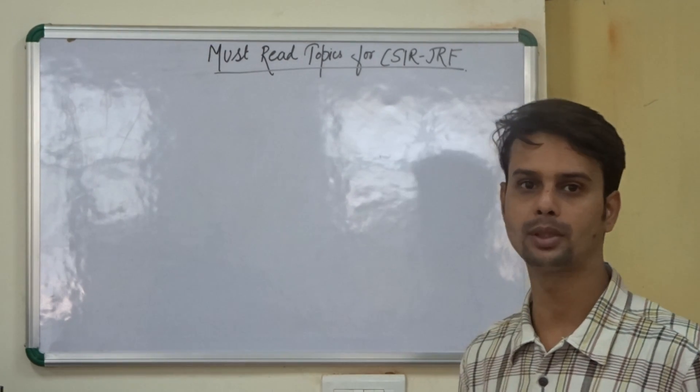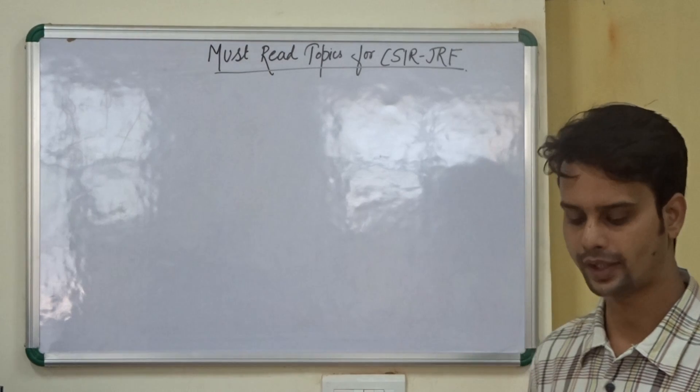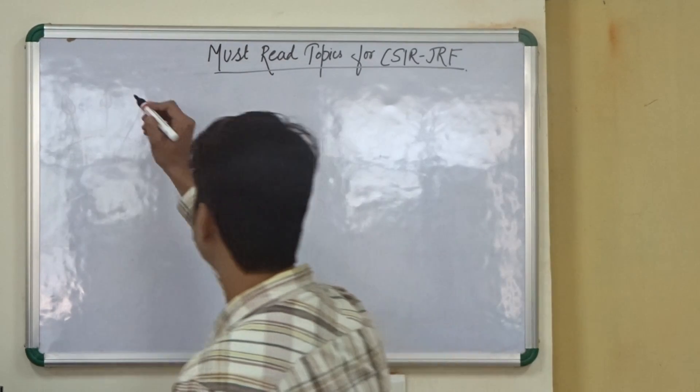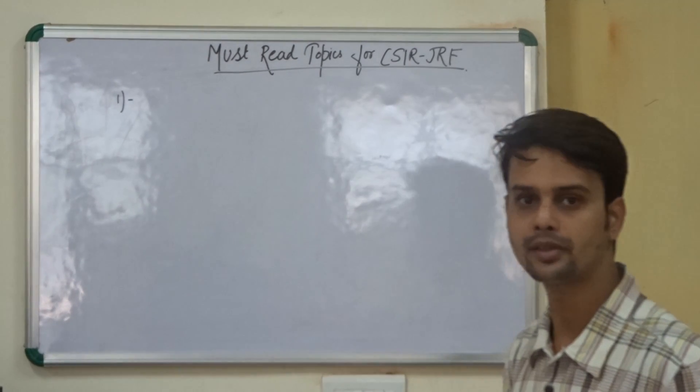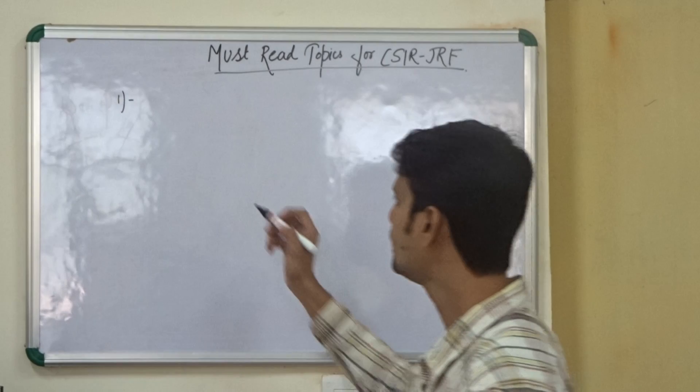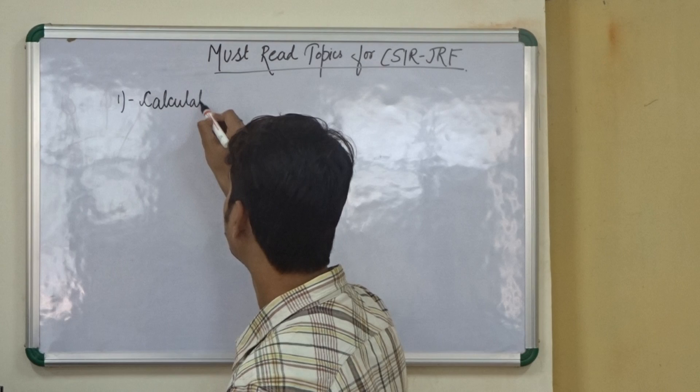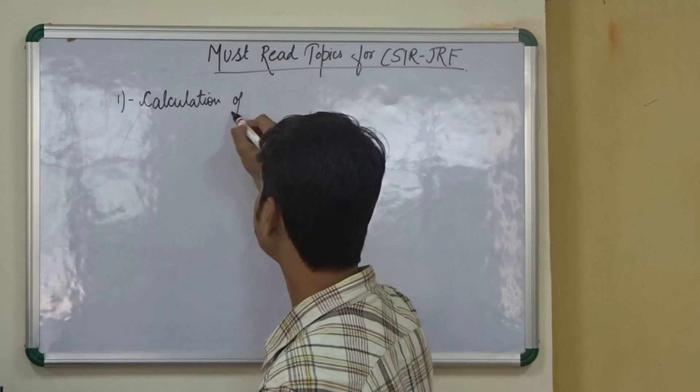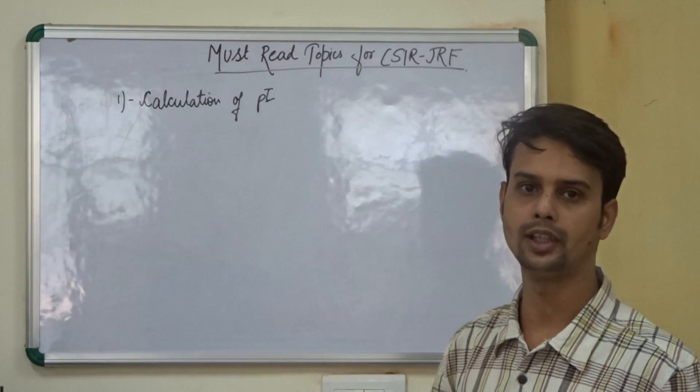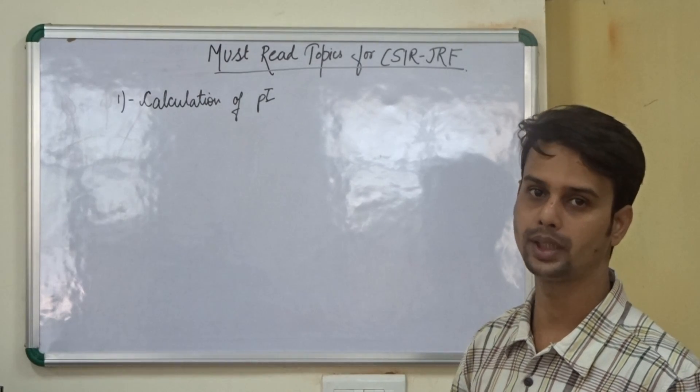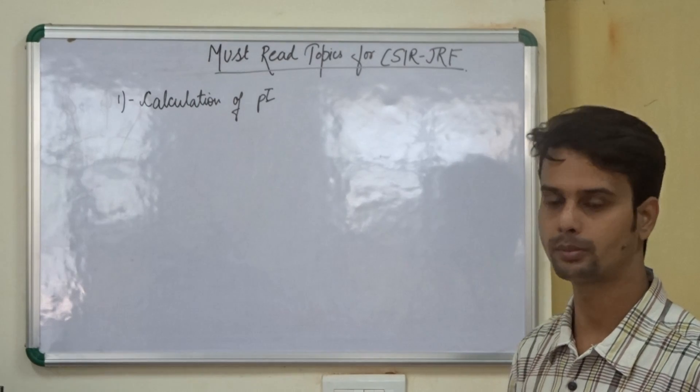I will be talking about the first three units of this syllabus of the CSIR-JRF. The first one is molecular biology, the biochemistry part. In the biochemistry part, we need to look at the calculation of PI value. They have given us the PK value of different amino acids and we need to calculate the PI value from it. This is the question that normally comes from the exam.